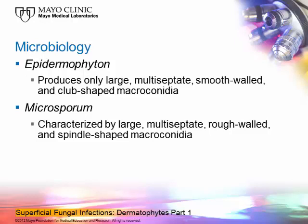The third genus in the clinical laboratory is Microsporum. It's characterized by large, multiseptate, rough-walled, spindle-shaped macroconidia. We see these macroconidia most of the time in cultures, and that's what helps identify the genus. However, we still see some microconidia in select cultures, so it can be a little confusing sometimes.